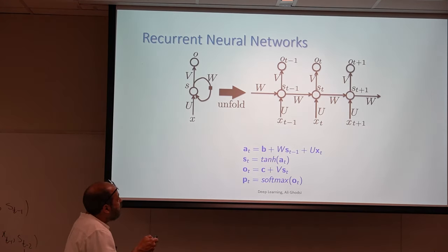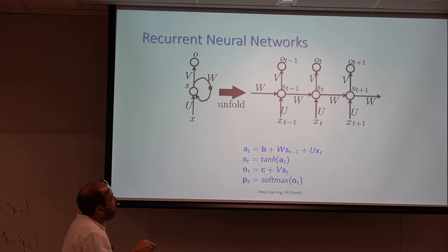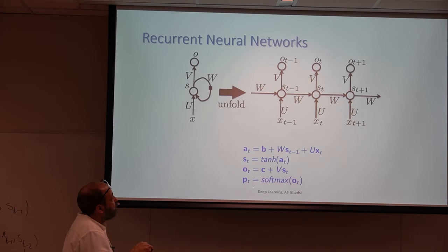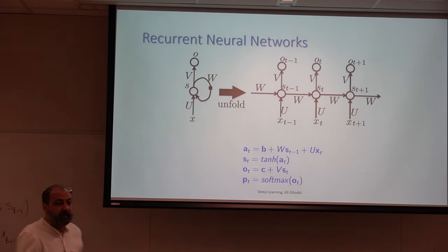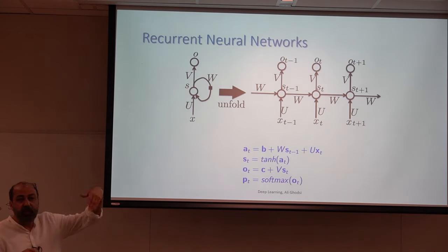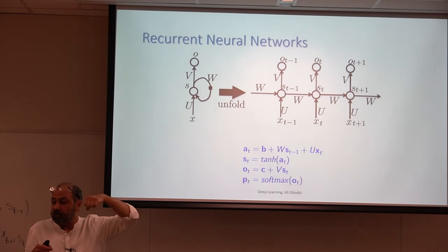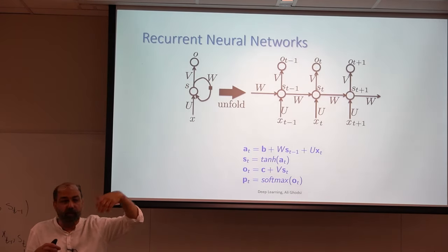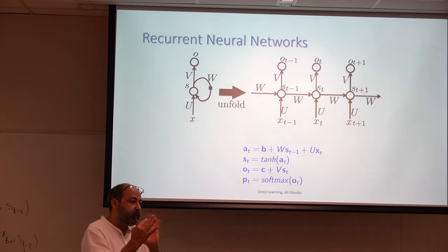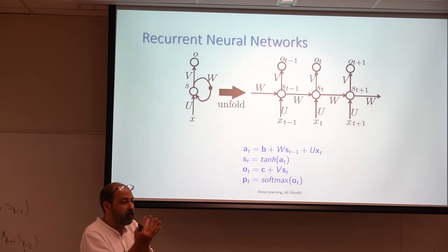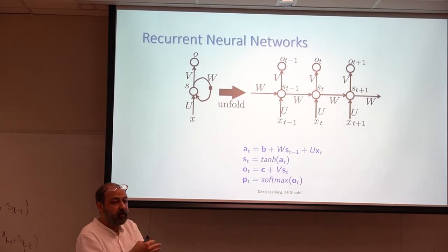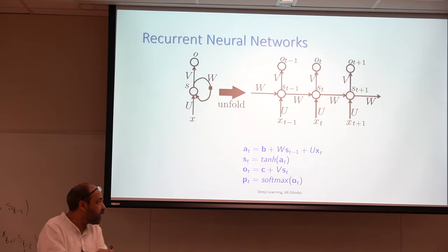The output is V times S_t, plus a bias. At the output, you usually apply a softmax, which maps this to P_t — a probability vector that we can compare with one-hot vectors, as in classification.